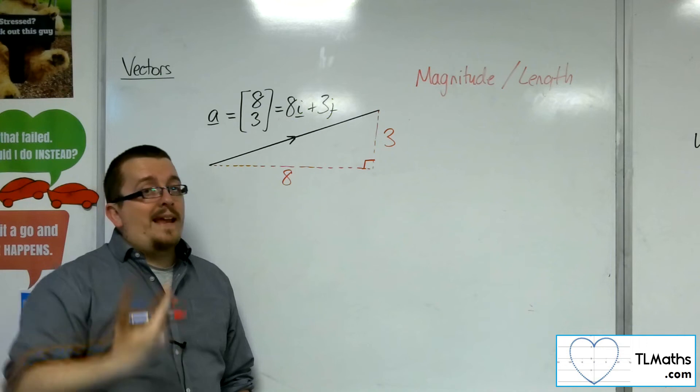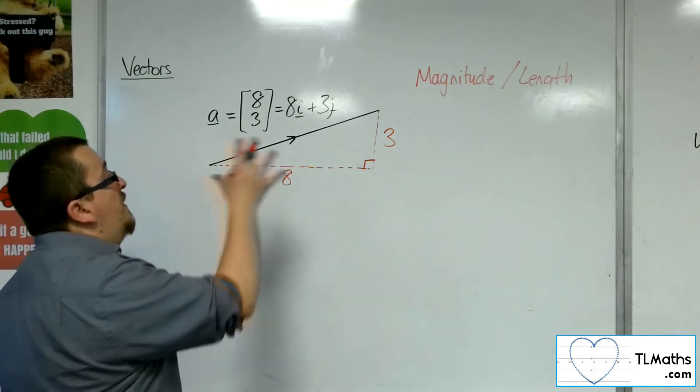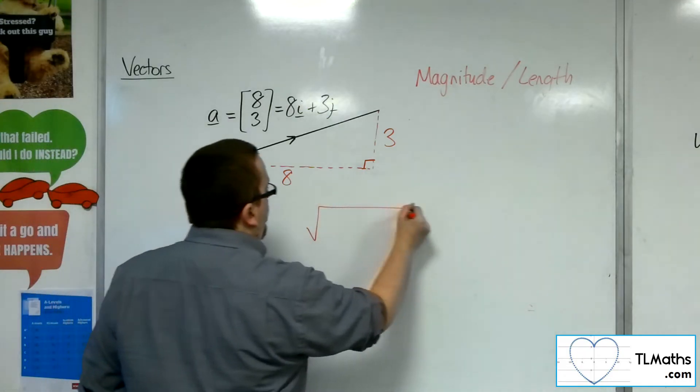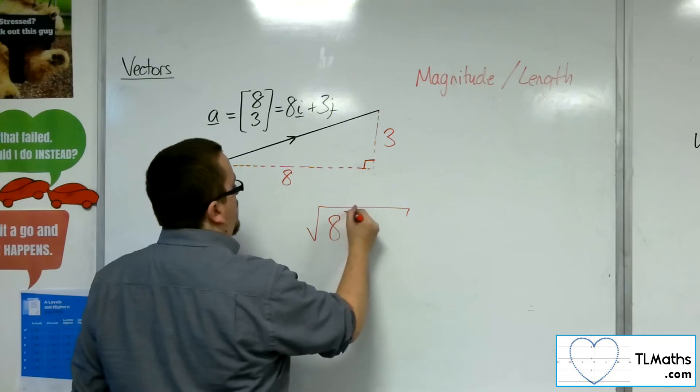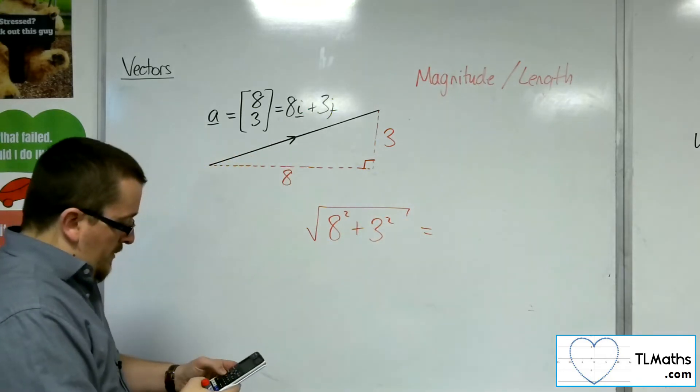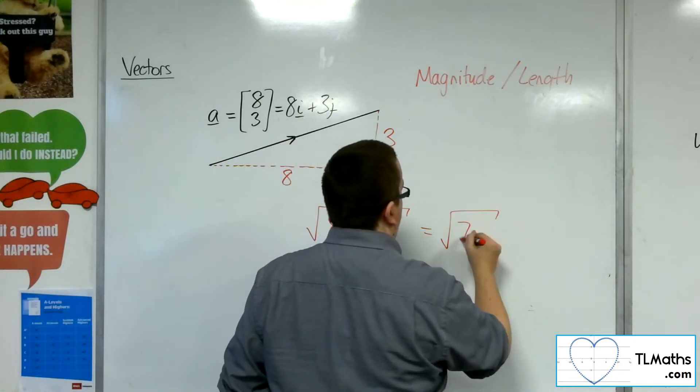So if I'm asked to find the length of that vector, well, it's the hypotenuse of this right-angled triangle. So I could just use Pythagoras. It would be the square root of 8 squared plus 3 squared. So square root of 64 plus 9, which is root 73 in this case.